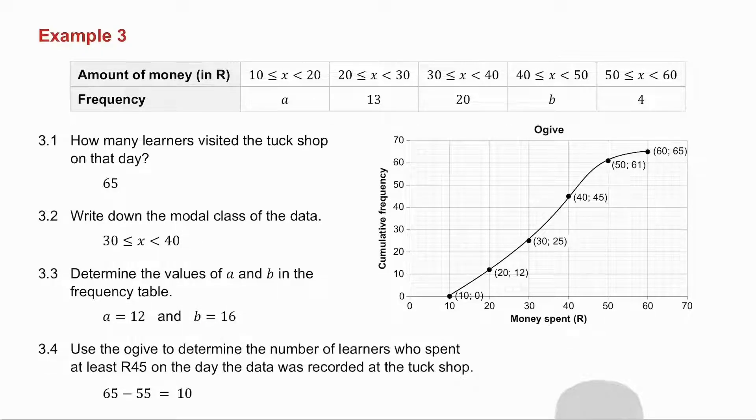They then ask you in 3.4 to use the ogive to determine the number of learners who spent at least 45 rand. So with a ruler, I go up from 45 and I go across. You get approximately 55. Now how many spent at least 45 means I want this section of the graph. So it's 65 minus the 55 that I read off. In other words, 10 learners.